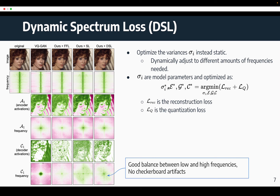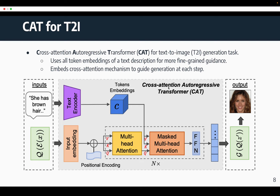Next, we also propose a cross-attention autoregressive transformer, CAT, for the text-to-image generation task. CAT utilizes all token embeddings of the text description using a pre-trained CLIP text encoder for more fine-grained guidance. It also embeds a cross-attention mechanism to guide the generation at each step, which is also utilized in other concurrent works such as ImageGen.